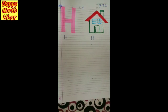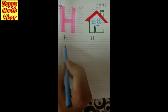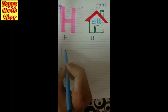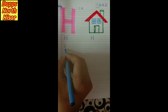Toh hum aaj H likhenge aapne is notebook mein. H likhne ke liye aapne kya karni hai? Three lines we are going to use — the first, second and third line. Sabse pahle humain karna hai straight line.